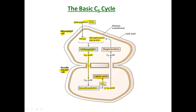The released carbon dioxide enters the Calvin cycle, where sugars are synthesized. C4 plants do not need photorespiration — it is absent in them. The C3 acid is then transported back to the mesophyll cells, where it regenerates phosphoenol pyruvate.